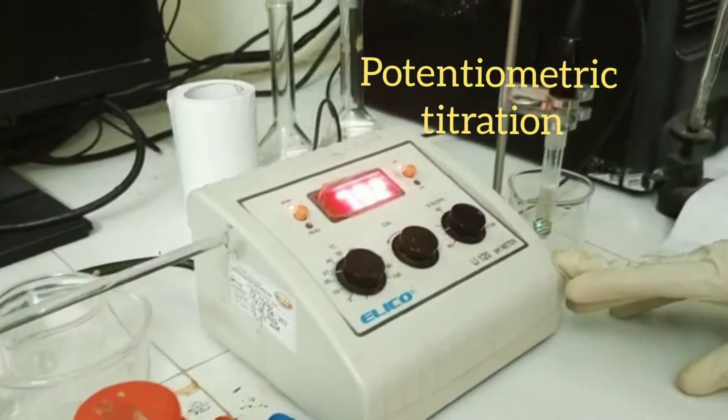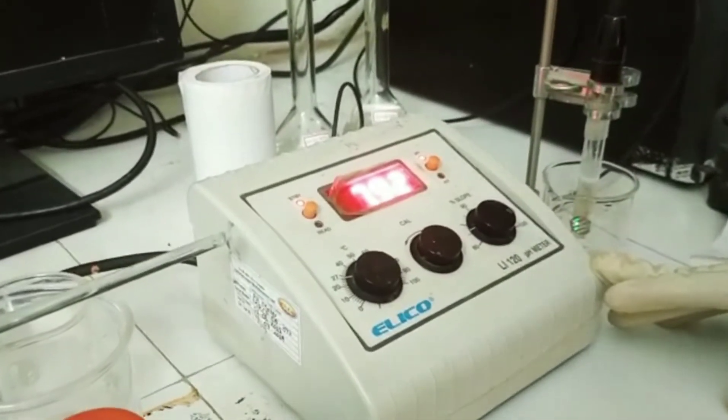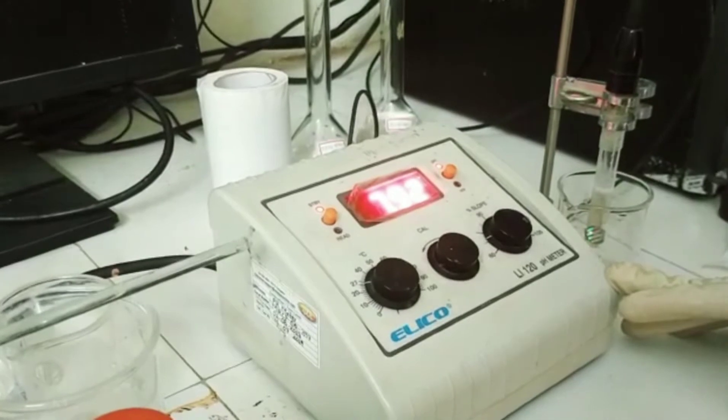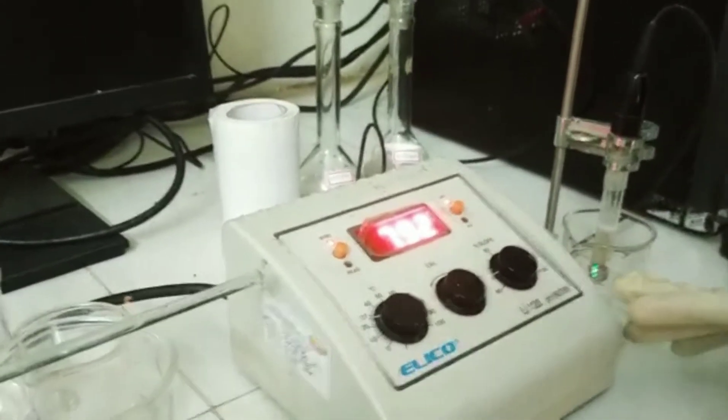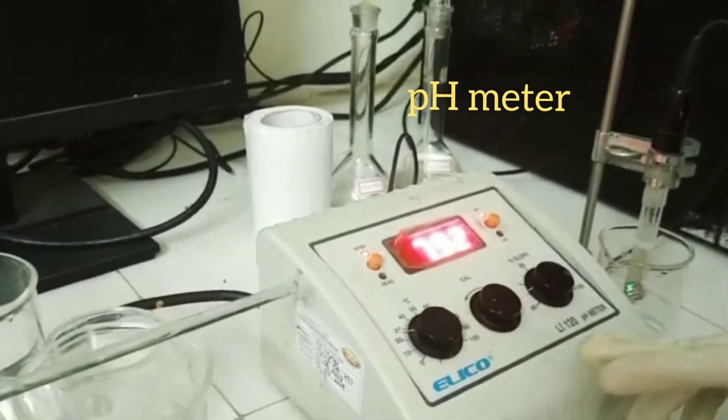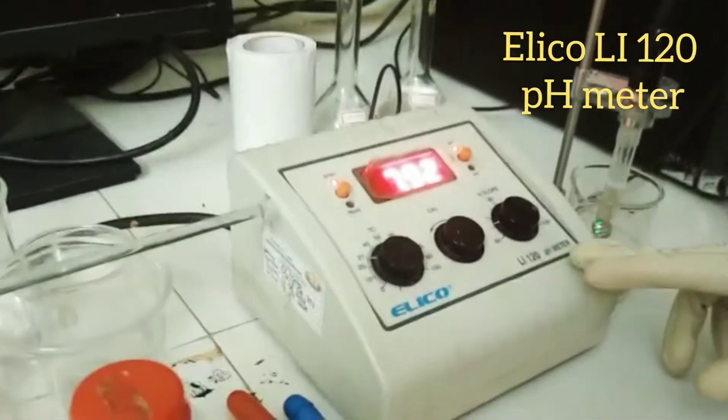Potentiometric titrations are usually performed by using a potentiometer. The same titrations involving the principle of potentiometry can also be performed by using the pH meter. So, today I want to demonstrate a potentiometric titration by using ELICO LI120 pH meter.